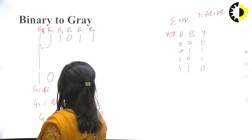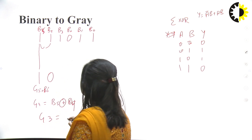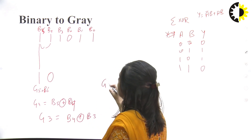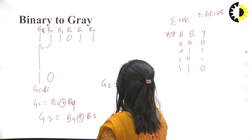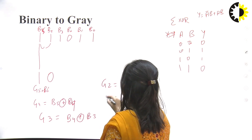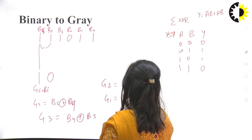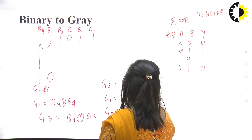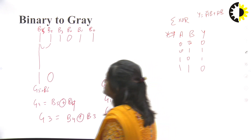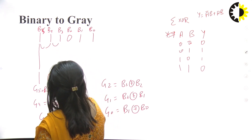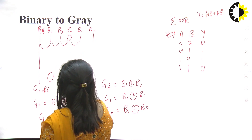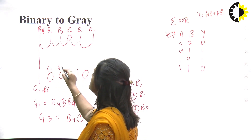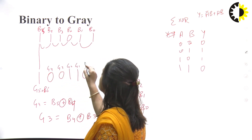Similarly, G3 = B4 XOR B3, G2 = B3 XOR B2, G1 = B2 XOR B1, and G0 = B1 XOR B0. Computing: 1 XOR 1 = 0, 1 XOR 0 = 1, 0 XOR 1 = 1, and 1 XOR 1 = 0. So the gray code bits are G5, G4, G3, G2, G1, G0.